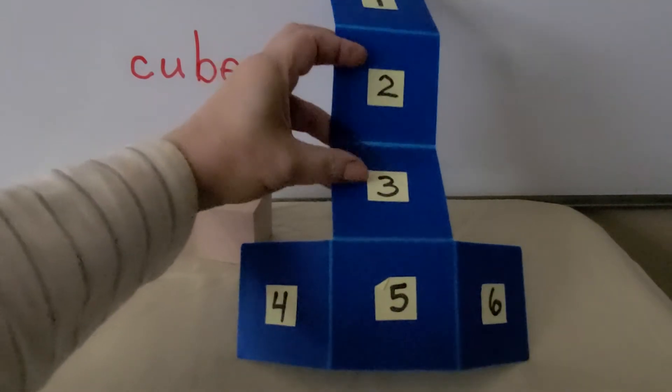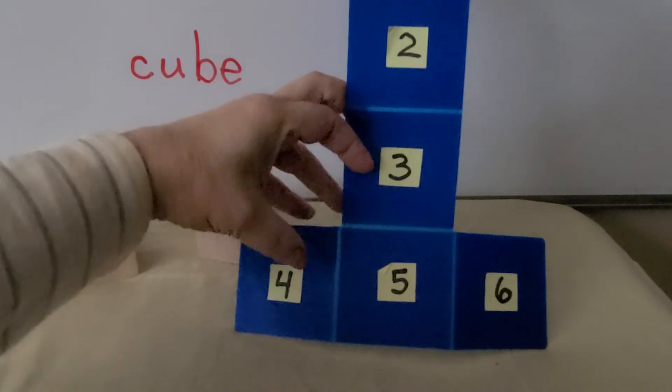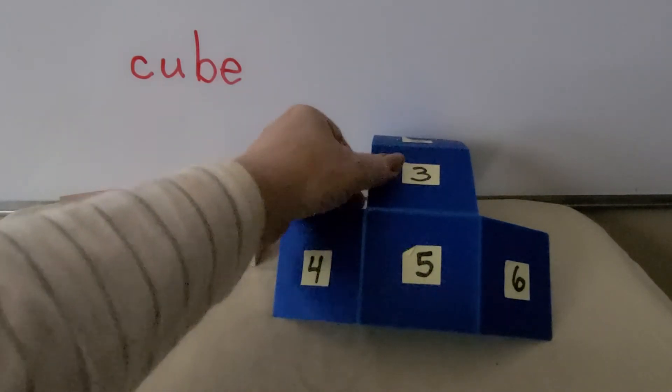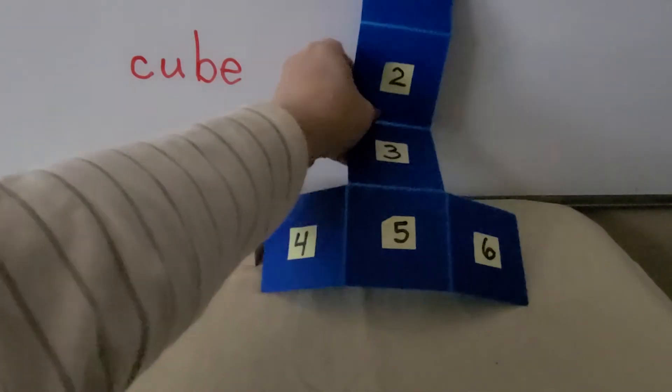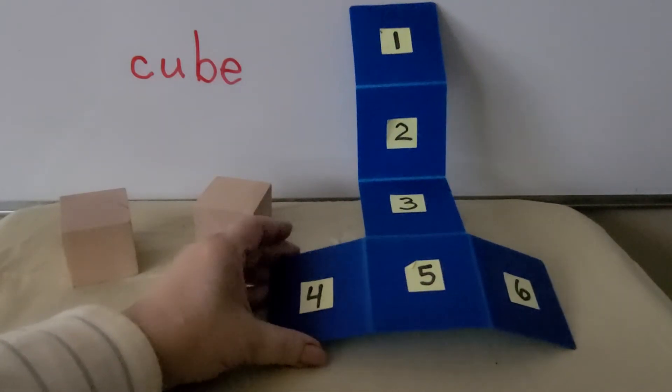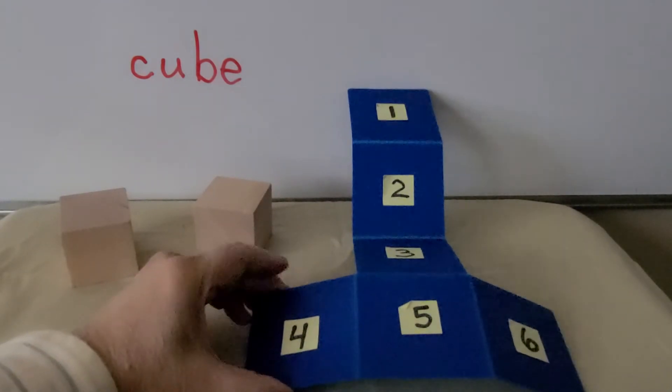One, two, three, four, five, six. There are six sides of a cube. This is what a cube looks like when it's unfolded.